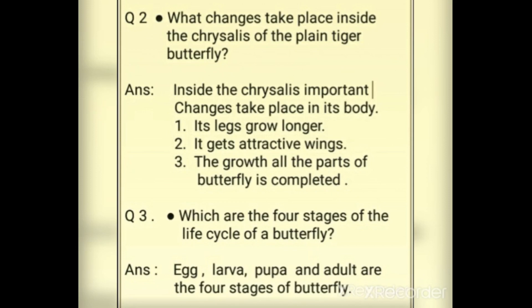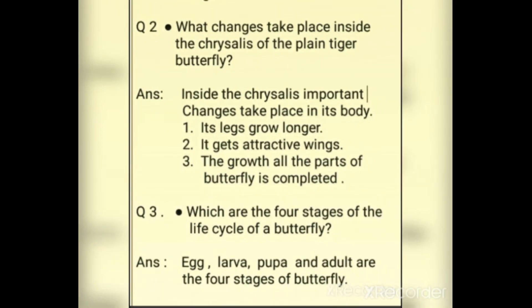Question 3: Which are the 4 stages of the life cycle of a butterfly? You have to write the 4 stages. The answer is: egg, larva, pupa, and adult are the 4 stages of a butterfly. These 4 stages of the butterfly are the same for all kinds of butterflies.